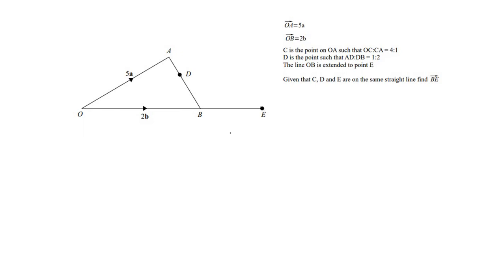Final question — this is about as hard as it gets with vectors. We're told O to A is 5a and OB is 2b. C is the point on OA such that OC to CA is 4 to 1, so C is near the top. D is the point on AB such that AD to DB is 1 to 2. The line OB is extended to point E. Given that C, D, and E are on the same straight line, find BE. Our goal is to find vectors CD and CE, then use collinearity to find BE.